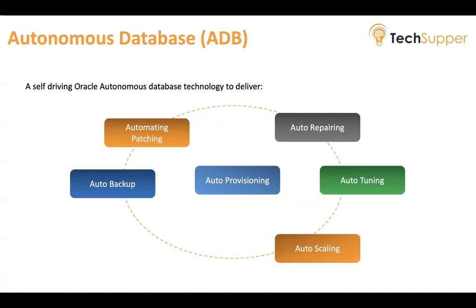Auto-backup: by default, backups are enabled and your database will be backed up. As and when you need a backup to create another database, you can create it from the backups. Auto-upgrades: your database will be upgraded automatically — there is no human intervention. All the administrator tasks are automated by the Autonomous Database.